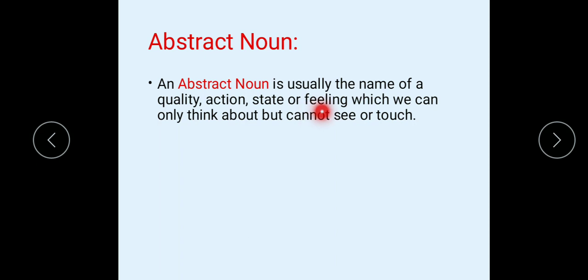Now, abstract noun. An abstract noun is usually the name of a quality, action, or state or feeling which we can only think about but cannot see or touch. In simple words, we can say: